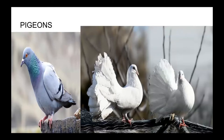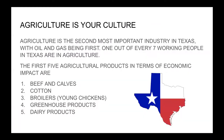Pigeons are another agricultural animal subject to heavy selective breeding — some for meat (if you've ever eaten squab, you ate a pigeon), some for show. Agriculture is your culture — it's the second most important industry in Texas, with oil and gas being first. One out of every seven working Texans works in agriculture. The first five agricultural products by economic impact are beef and calves, cotton, broilers, greenhouse products, and dairy products.